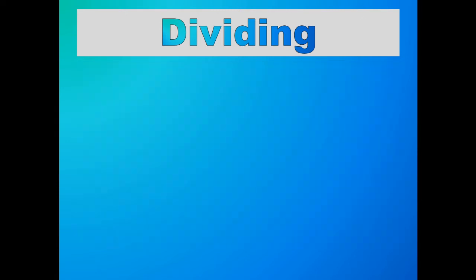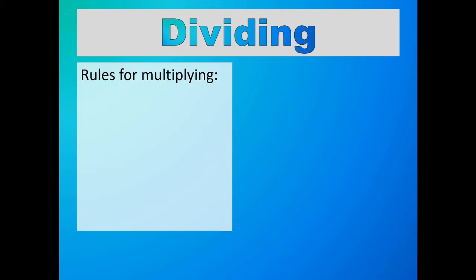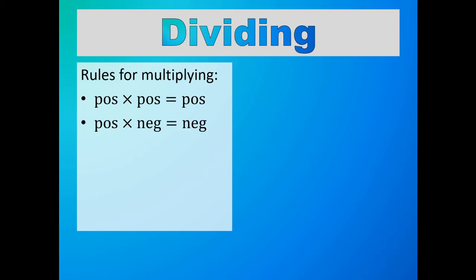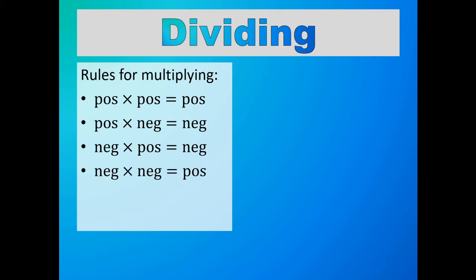Let's again use this fact that division is the opposite of multiplication. Here are all the rules for multiplying real numbers. The reasons behind these rules can be found in a previous set of videos about multiplying and dividing positive and negative numbers — hopefully the link for that set of videos is in the description. A positive number times a positive number is a positive number. A positive number times a negative number is a negative number. A negative number times a positive number is a negative number. A negative number times a negative number is a positive number.